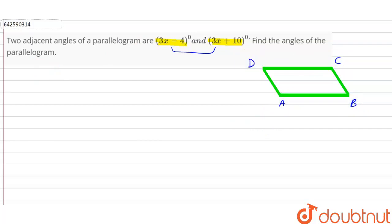So we can say angle A and angle B are adjacent angles, and angle A plus angle B is equal to 180 degrees. The reason being sum of adjacent angles is equal to 180 degrees.